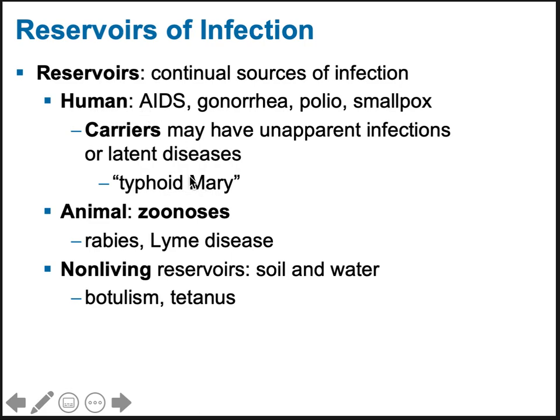Typhoid fever is another disease only found in humans, with potential for eradication — we have a vaccine for some strains. We also have the problem of carriers: people who once had symptoms, think they've fully recovered, but still have a small colonization and continue to shed the bacteria, infecting other people even though they don't have any signs themselves.